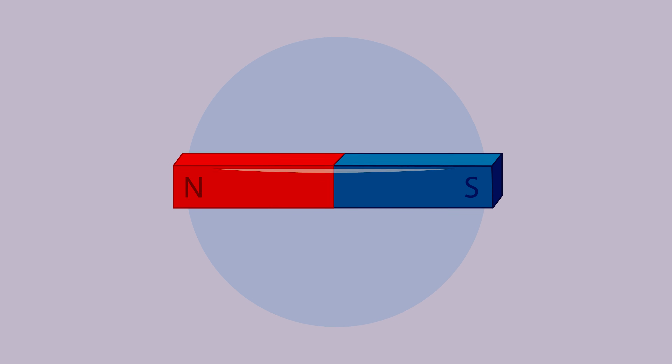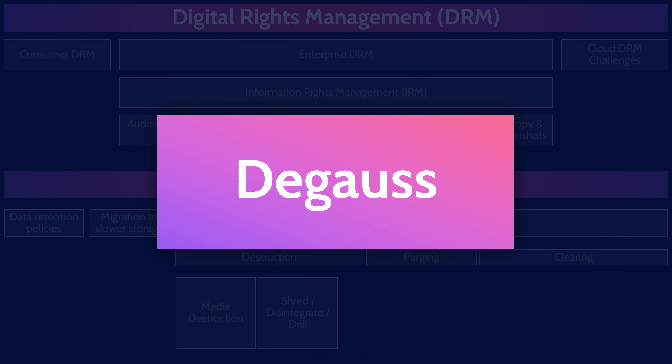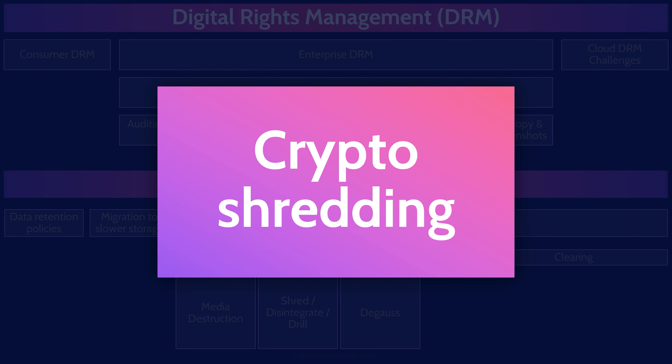Degaussing involves applying a very strong magnetic field to magnetic media like hard drives or tapes, which destroys the data. Degaussing sits between destruction and purging because it may render both the data and the media unusable, essentially destroying the media. Crypto shredding is the idea that we encrypt the data with an excellent algorithm like AES with a 256-bit key, then destroy every single copy of the encryption key, making the data effectively unrecoverable. Crypto shredding fits between purging and clearing: as long as the key is never recovered or brute-forced and no flaw is found in the algorithm, the data has been purged — but if the key were found, the data may be recoverable, making it merely cleared.